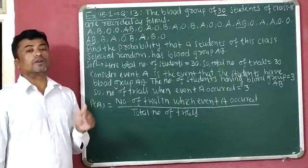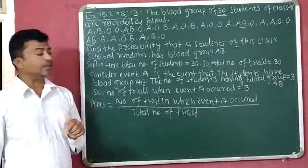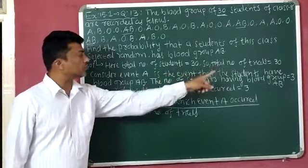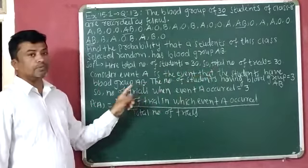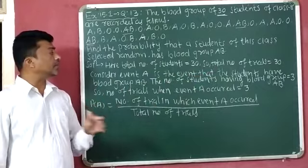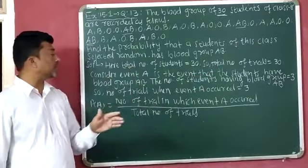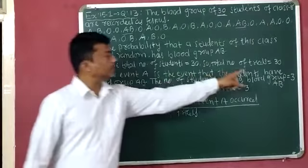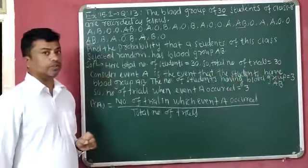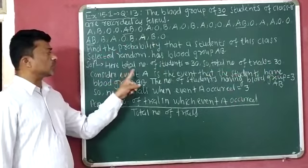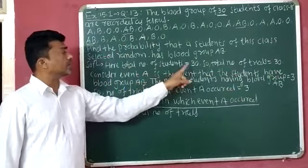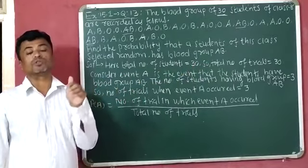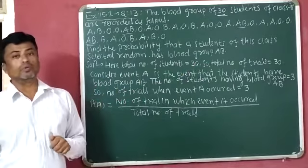To solve this question, we will consider event A. Event A is the event that the students have blood group AB. The number of students having blood group AB is equal to 3. First, we will identify the number of students who have blood group AB.